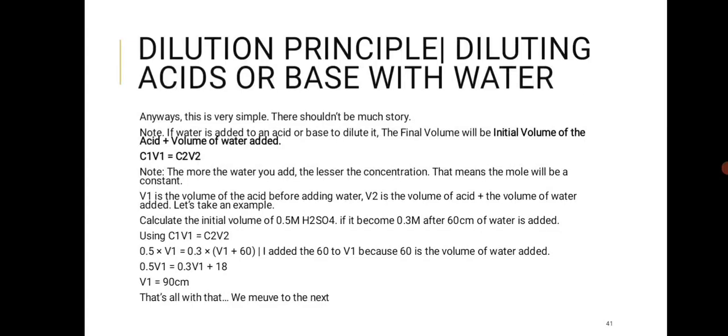For the dilution principle, C1 is the initial concentration and C2 is the final concentration. If you are adding water, expect the concentration to be lower; if you are removing, expect it to be higher. V1 is the initial volume and V2 is the final volume, so V2 equals V1 plus the volume of water added.